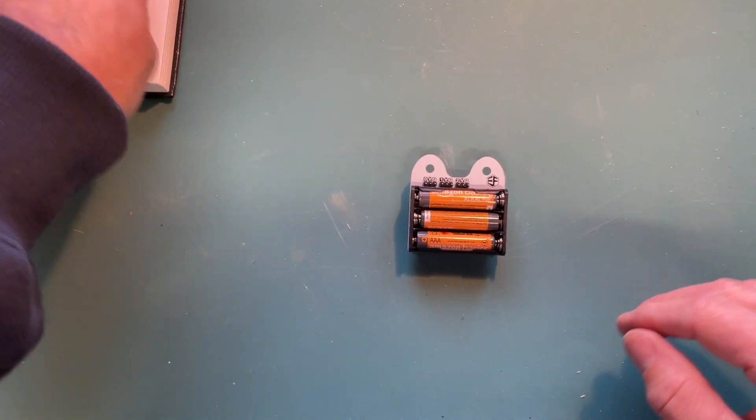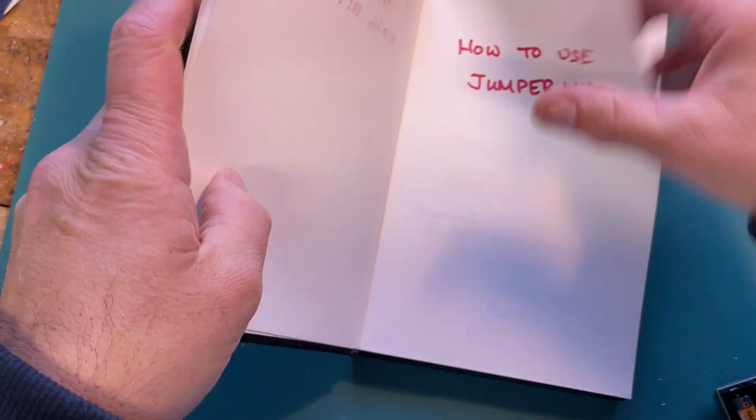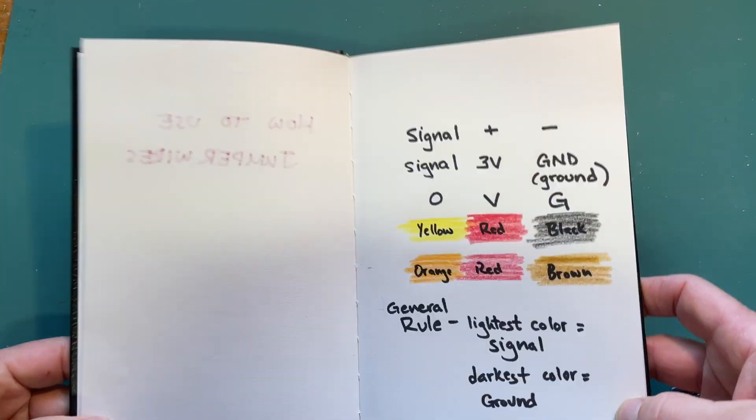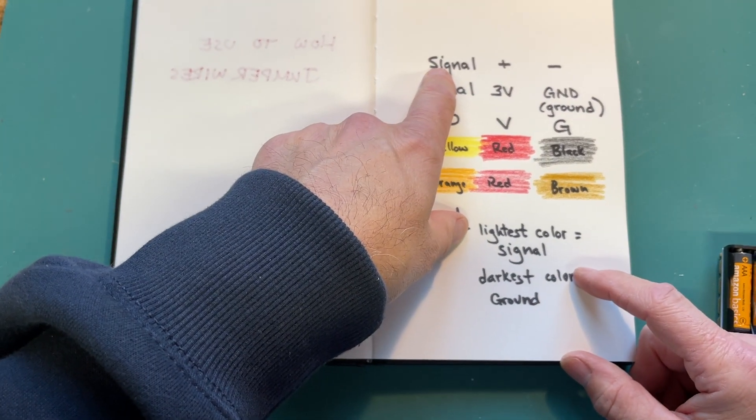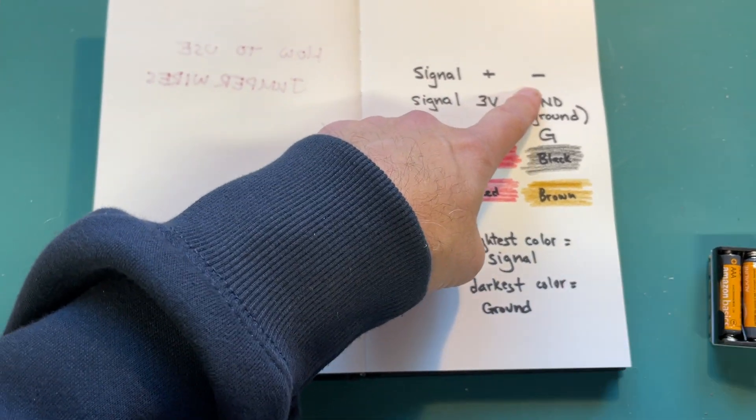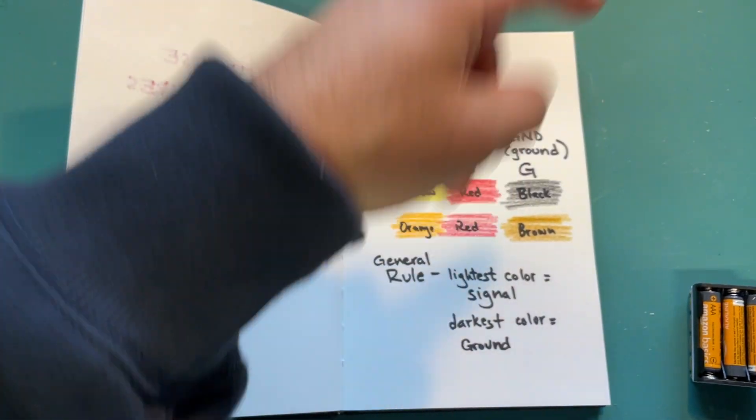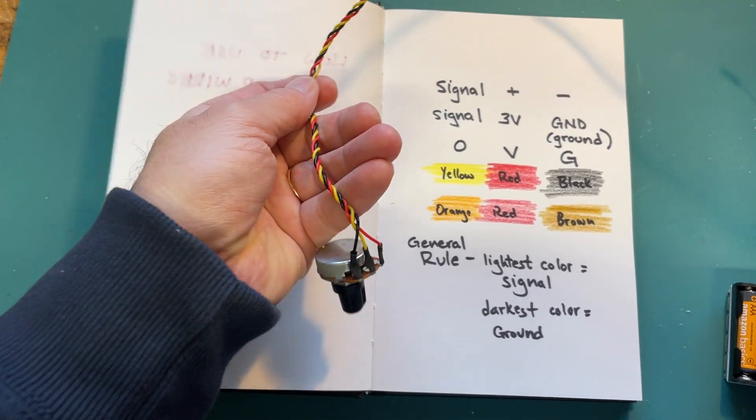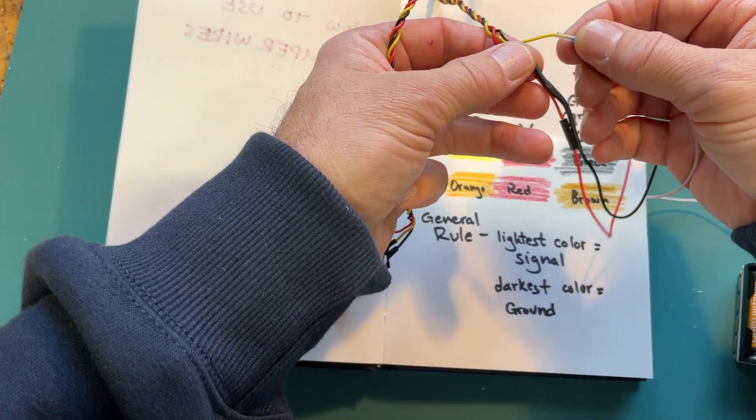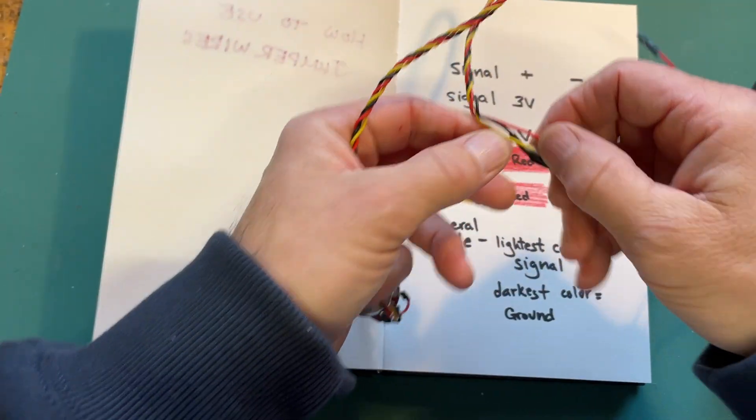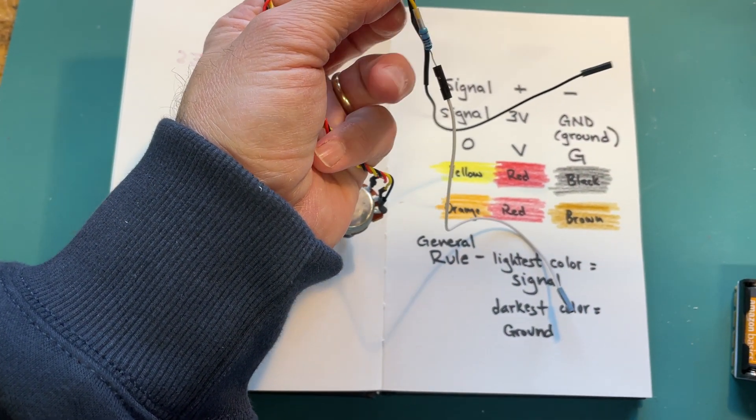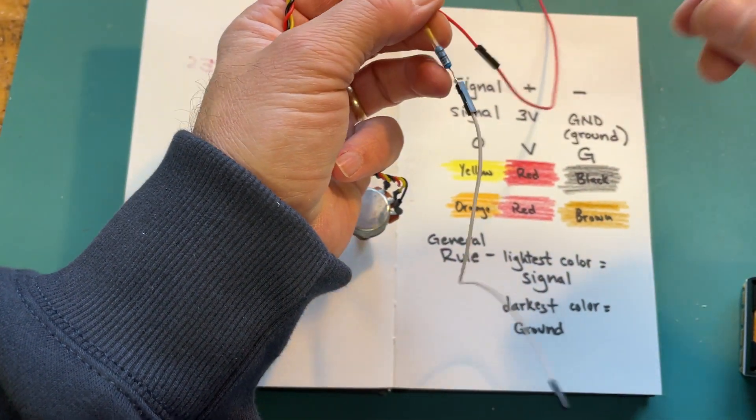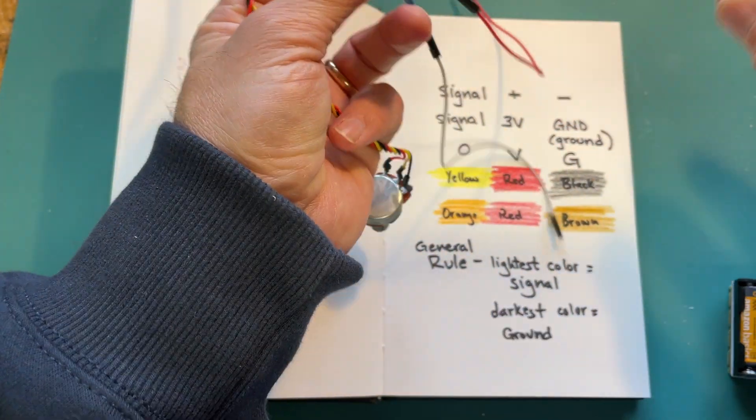One of the things that's complicated about electronics like this is that we use many different ways to show the same thing. So you could say signal, plus, and minus, and the signal is the information-carrying wire. On here it's the yellow. The plus is the voltage, the electricity positive coming in, that's positive which is red. And then there's the ground which is negative and that's black.